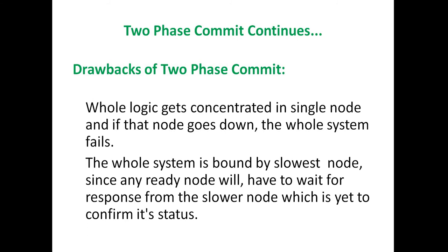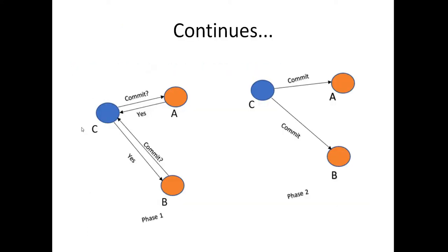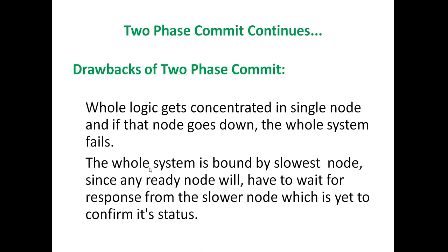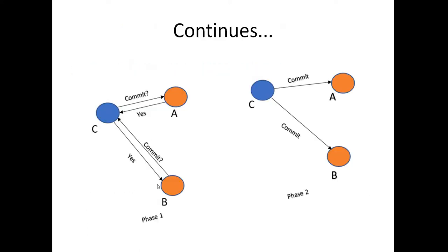Drawbacks of the two-phase commit pattern: all logic gets concentrated in a single node, and if that node goes down, the whole system fails — meaning if node C goes down, the entire system will fail. Also, the whole system is bound by the slowest node, meaning any ready node will have to wait for a response from the slower node which is yet to confirm its status, so if any node A or B is slow, the entire system gets slow.